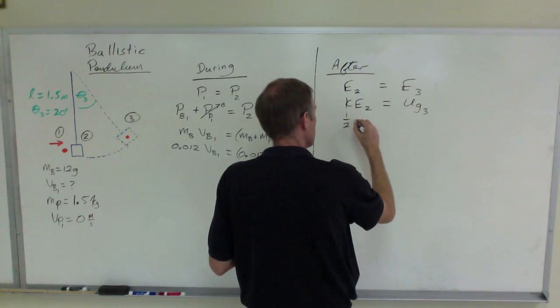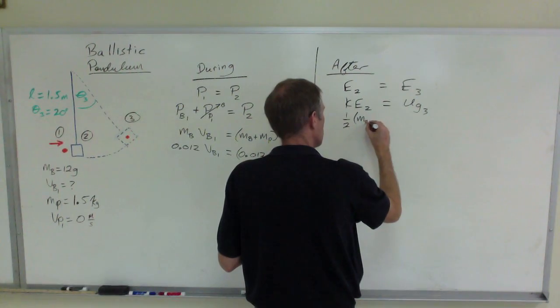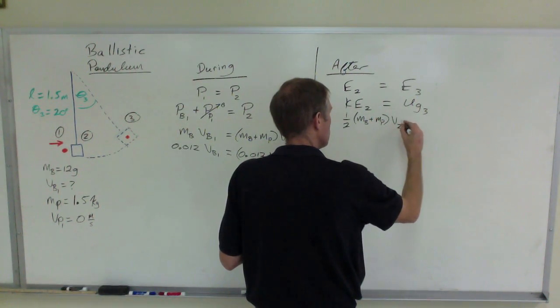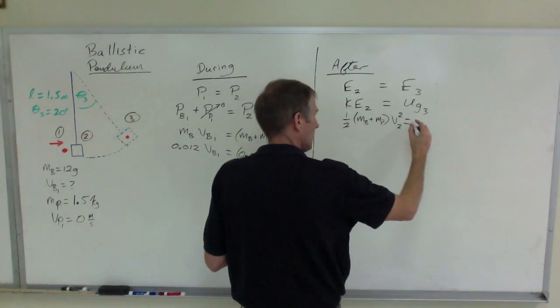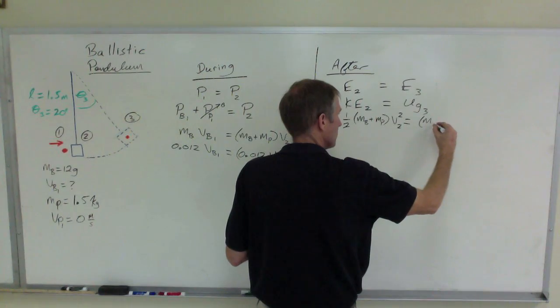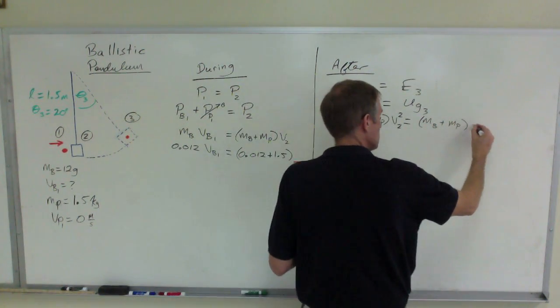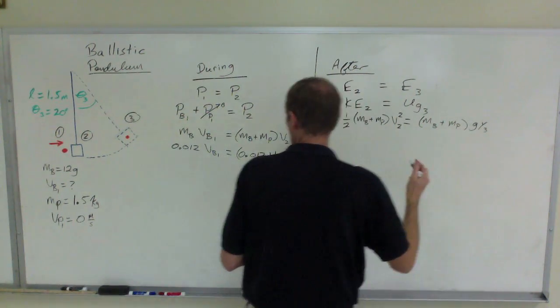One half times the mass of the whole system, that's the mass of the bullet plus the mass of the pendulum, times the velocity at point two squared. Remember that's what we need here. Equals the mass of the whole system, times G, times the height at point three.